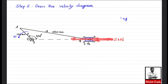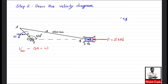The angular velocity of the crank is assumed as ω (anticlockwise, since the external force drives the slider left). The velocity of point A with respect to O is V_AO = OA × ω = 0.1 × ω = 0.1ω. Its direction is perpendicular to link OA.